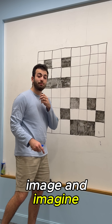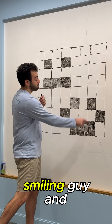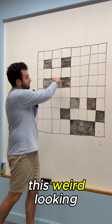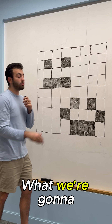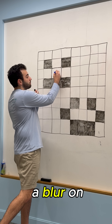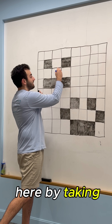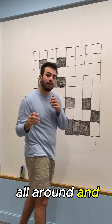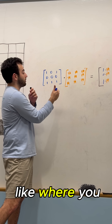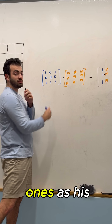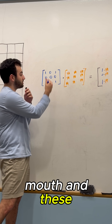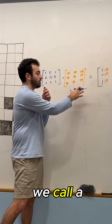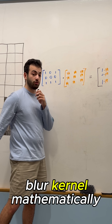Let's take this image — imagine me as the smiling guy and imagine the naked guy as this weird looking guy. What we're going to do is induce a blur on this pixel right here by taking the values from all around it. In matrix form, this is what it would look like, where you can imagine these ones as his mouth and these ones as his eyes, and we're going to multiply by what we call a blur kernel.